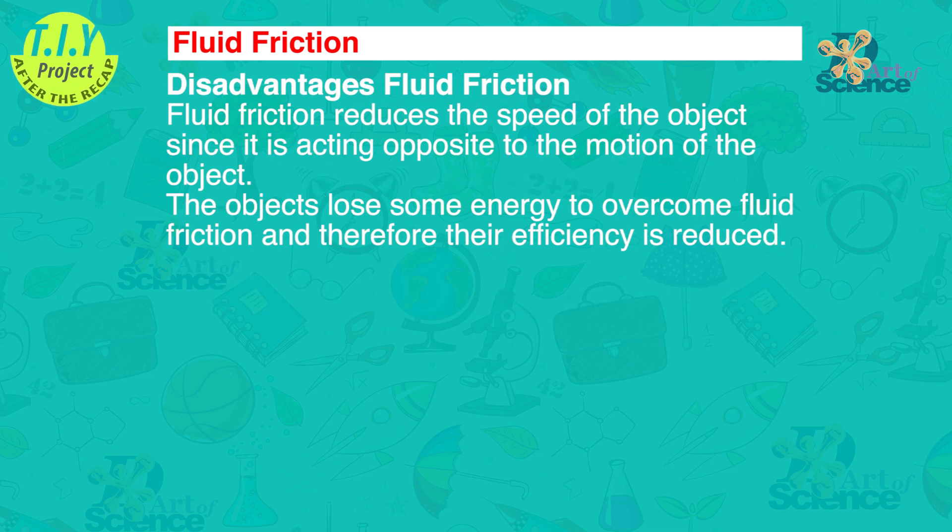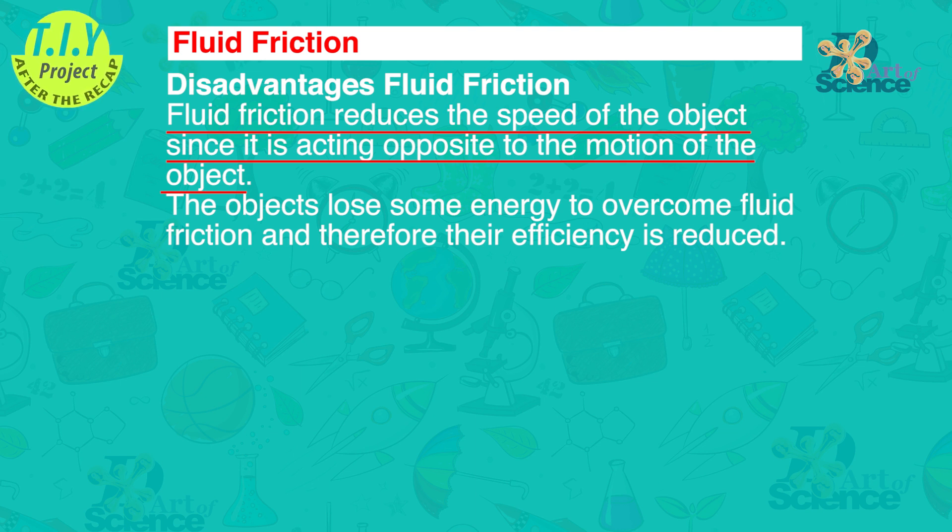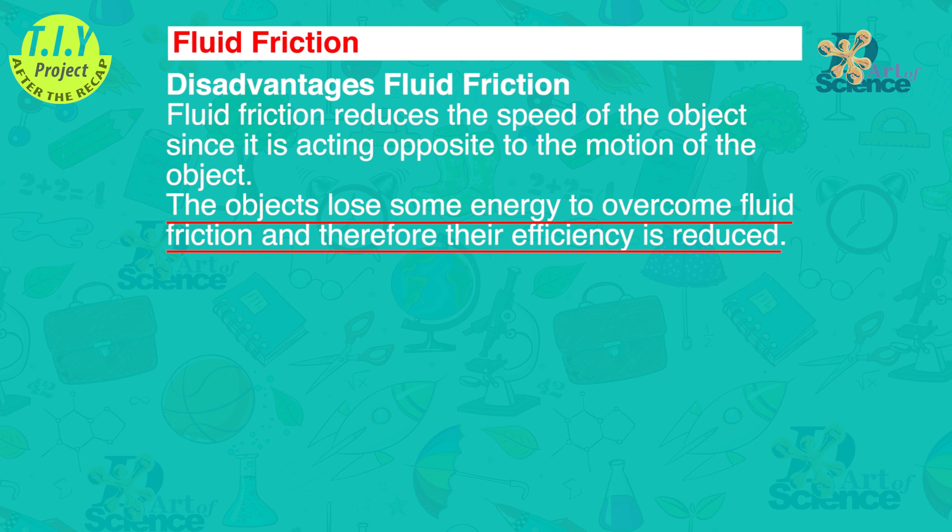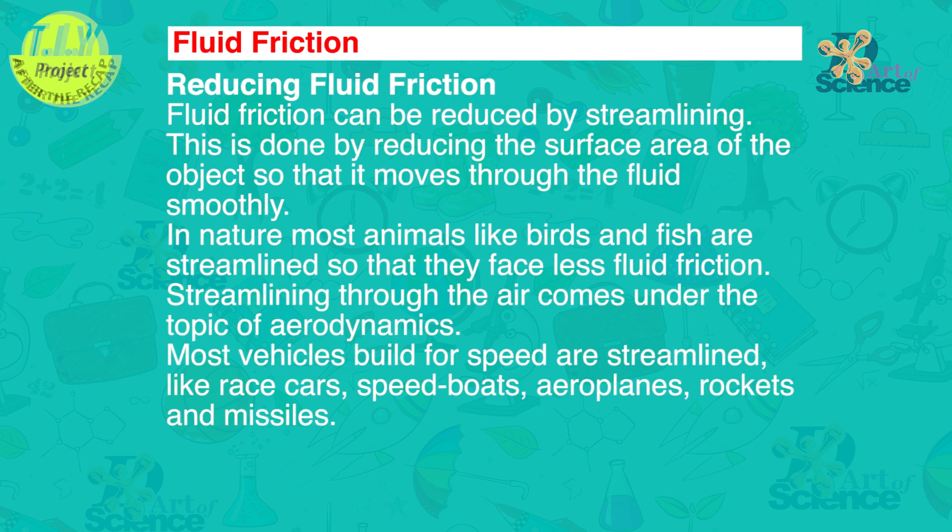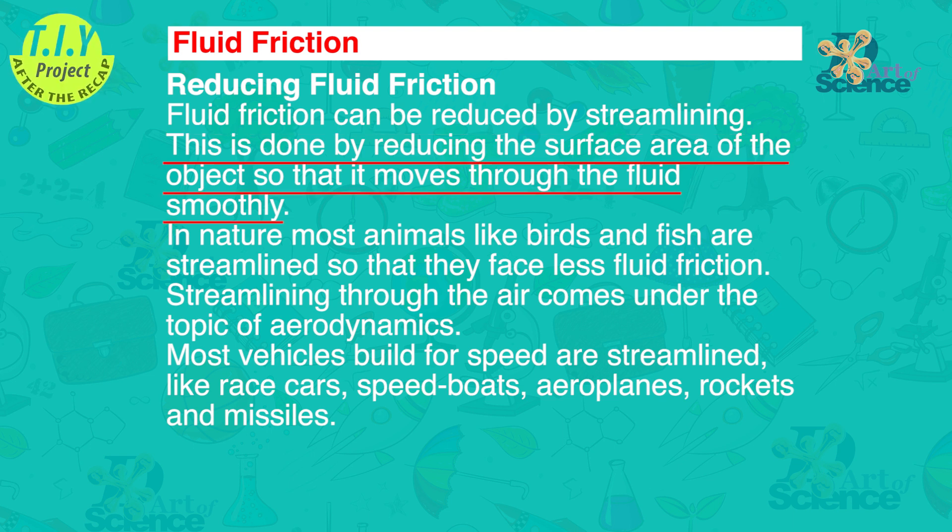Disadvantages of fluid friction: Fluid friction reduces the speed of the object since it is acting opposite to the motion of the object. The objects lose some energy to overcome fluid friction and therefore the efficiency is reduced. Fluid friction can be reduced by streamlining. This is done by reducing the surface area of the object so that it moves through the fluid smoothly.